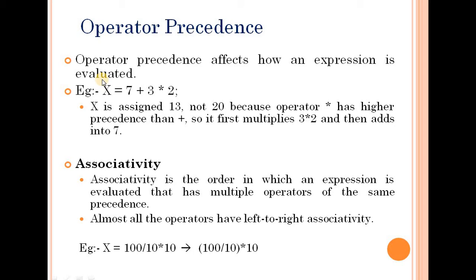When operators come with the same precedence and same priority, we use associativity. Consider the example: x equal to 100 divided by 10 into 10. Division and multiplication have the same priority, so we consider associativity.